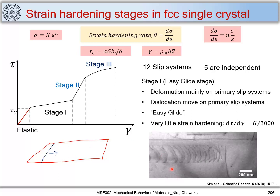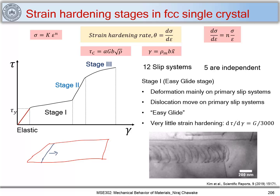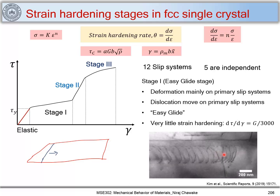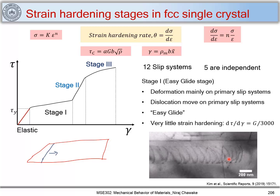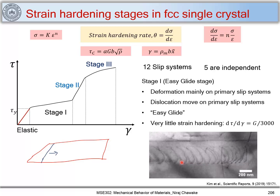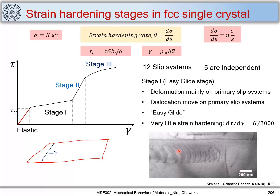Looking at a TEM micrograph showing easy glide, we can see that dislocations are moving predominantly on the primary slip systems. There is not much resistance to the motion of these dislocations, and thus there is very little strain hardening in stage one.